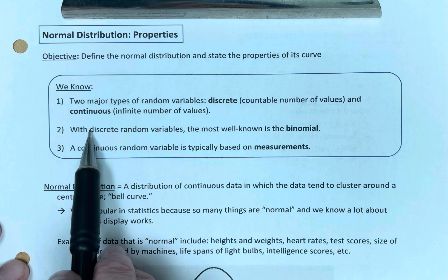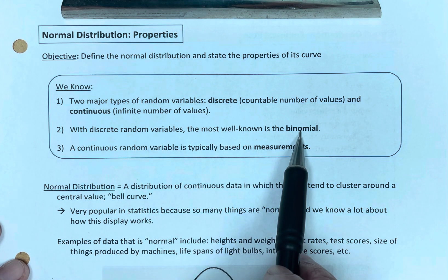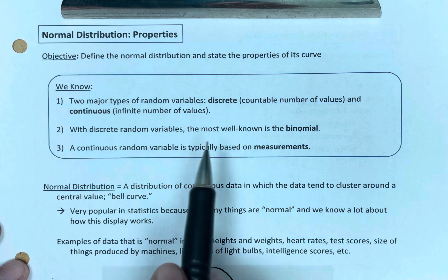We know, number two, with discrete random variables, the most well-known is the binomial. We've looked at that in previous videos.